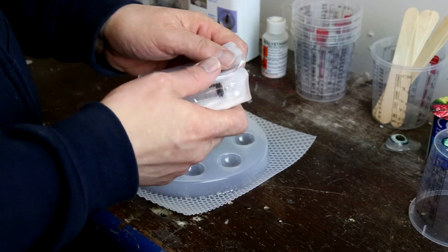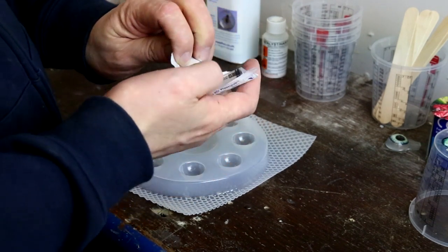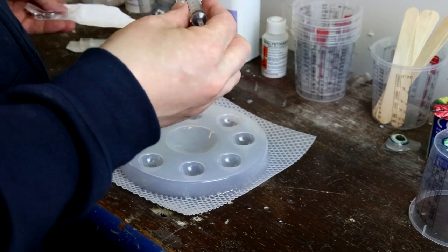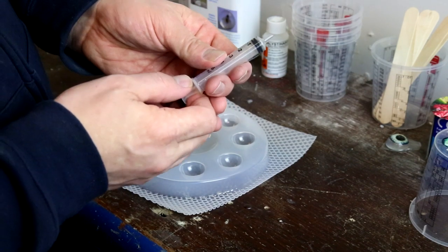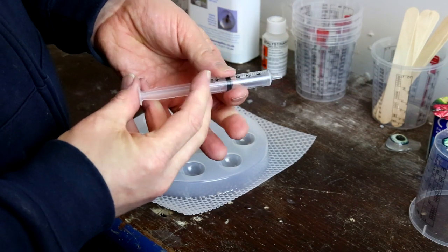A syringe. This resin only uses a very small amount of catalyst, 1%, so you will need a syringe to accurately measure the catalyst.